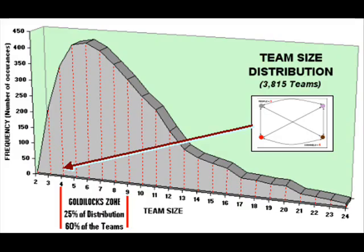Four people is the start of the Goldilocks zone. This graphic shows the size distribution of about 3,800 actual teams operating in the real world. Most teams in corporate America fall within a zone beginning at four people.